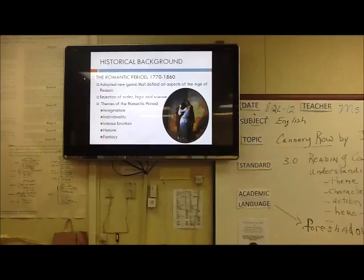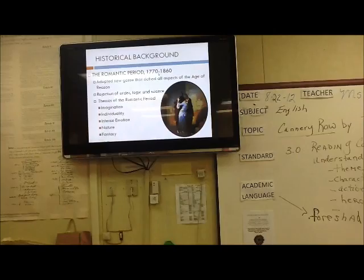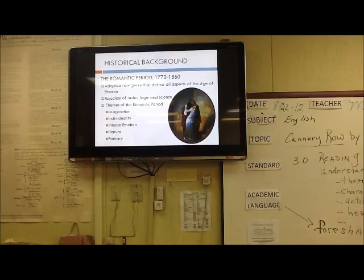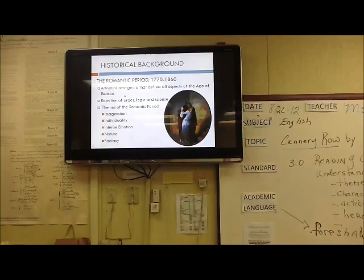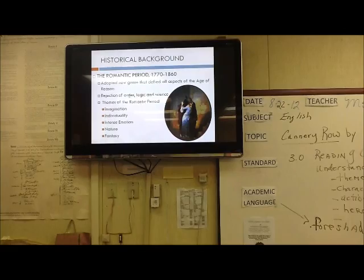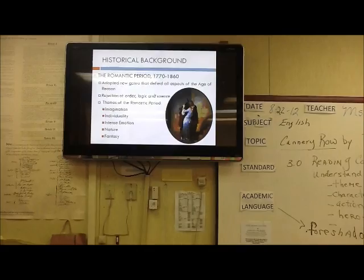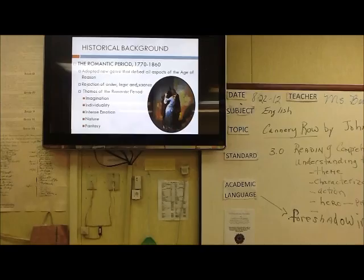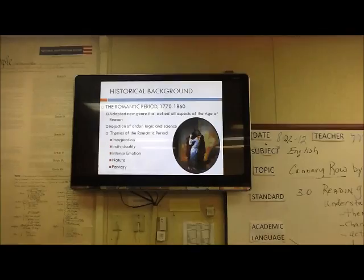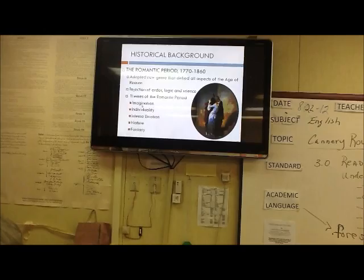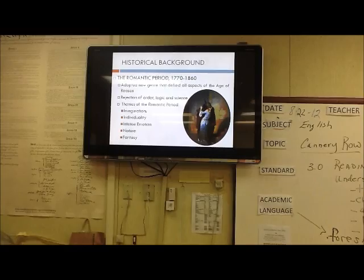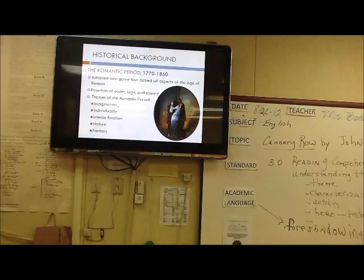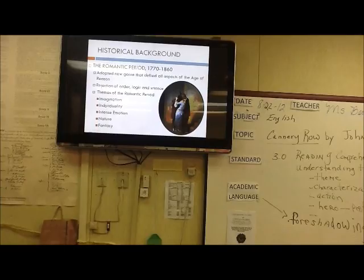In contrast, the Romantic Period ran from 1770 to 1860. This was a period of a new revolution. Authors now adopted a new genre that defied all aspects of the Age of Reason. They rejected order, logic, and science — including Darwin's theory of evolution, which claimed that man was a descendant of the ape, and that was not accepted during the American Romantic Period. Authors were now able to use their imagination. They wrote about adventure, love, and faraway places they'd never been to. The individual expressed their own viewpoints, their own needs, their own desires.